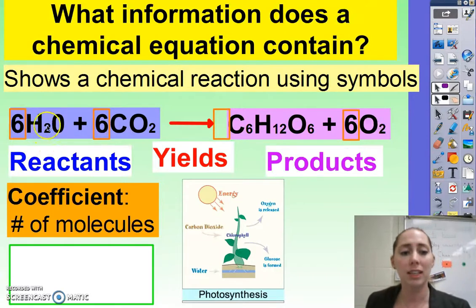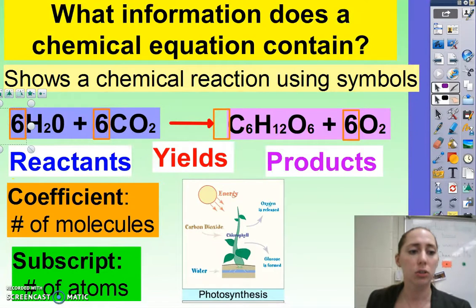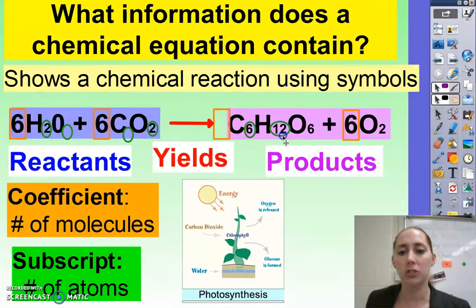We've also got these little numbers down here. Those are our subscripts. Sub meaning below, script meaning worth. And that tells us the number of atoms in the molecule. So we've got two hydrogens for every one oxygen. We have one carbon for every two oxygens. We have six carbons here with 12 hydrogens and six oxygens. And then here in the oxygen molecules, we have two oxygens per molecule.